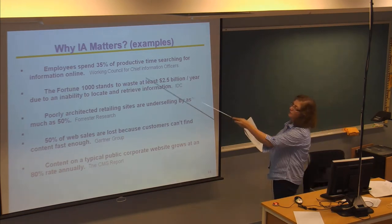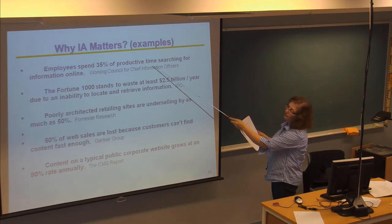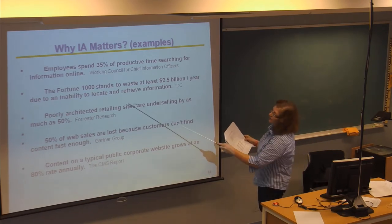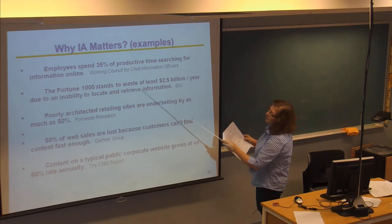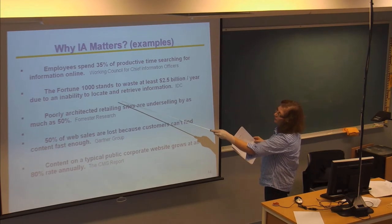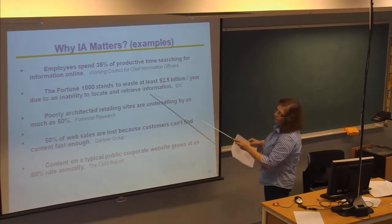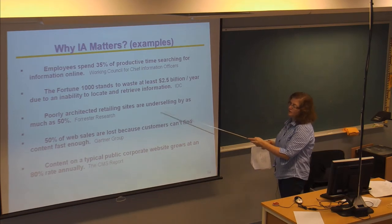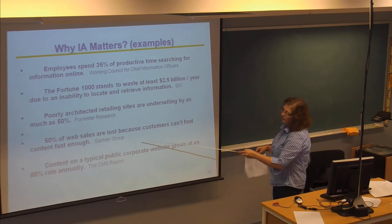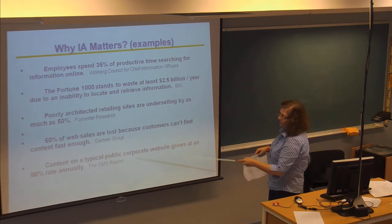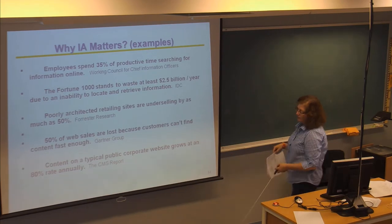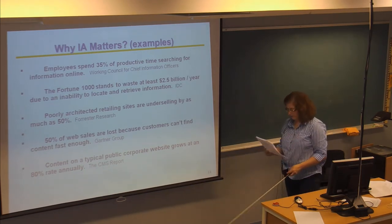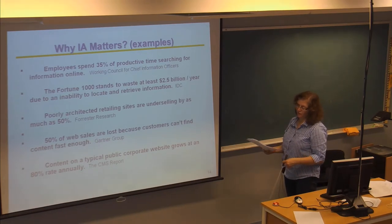So, why does information architecture matter? And these are some examples that were given in the book. Basically, the employees, if it's poorly designed, can waste more time in searching. And the problem of there can be a waste in the inability to locate and retrieve information, which costs companies a lot. Partly architected retail sites may undersell. So, that means you're losing out on sales. 50% of the web sales are lost because customers can't find it fast enough. And then the content on the typical public corporate website grows at 80% rate annually, meaning that if you don't have a good design, you're losing out on the potential growth rate.